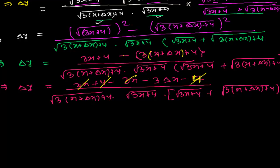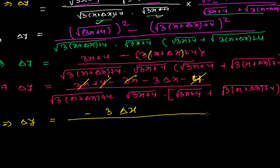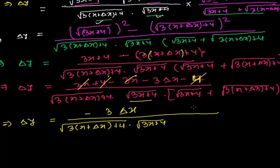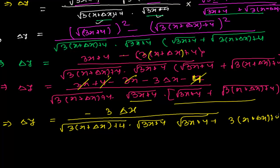After cancellation I am left with δy equals −3δx in the numerator, divided by √(3(x + δx) + 4) times (√(3x + 4) + √(3(x + δx) + 4)) in the denominator.